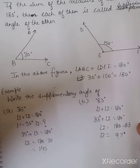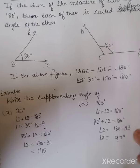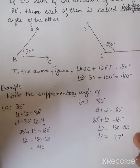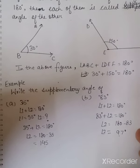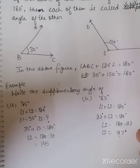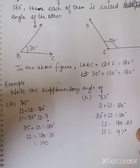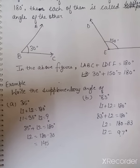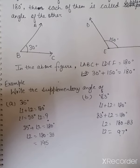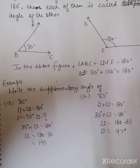Students, this is all about supplementary and complementary angles. I hope you have understood it. Now, you have to practice exercise 6.4. In this exercise, you will identify different types of angles — whether it is an acute angle, reflex angle, obtuse angle, straight angle, or right angle — and also the complementary and supplementary angles. Thank you and have a nice day.